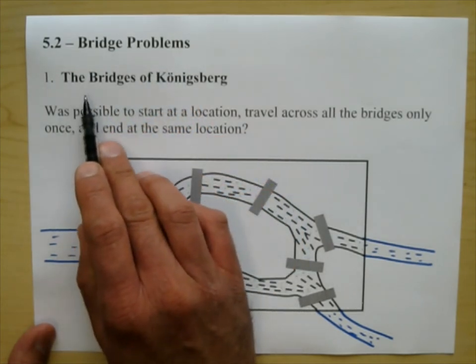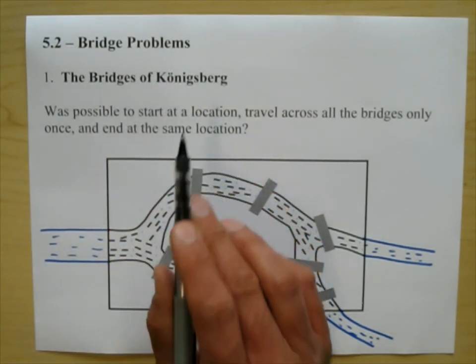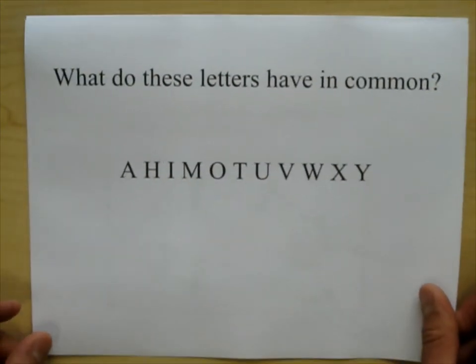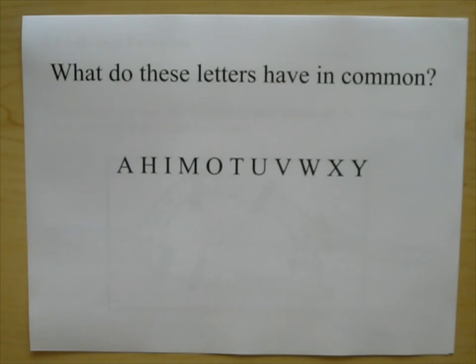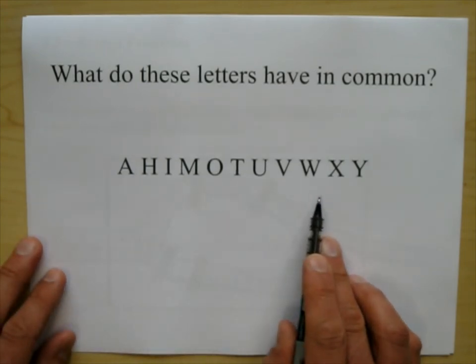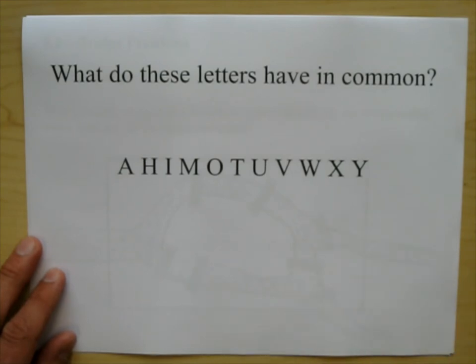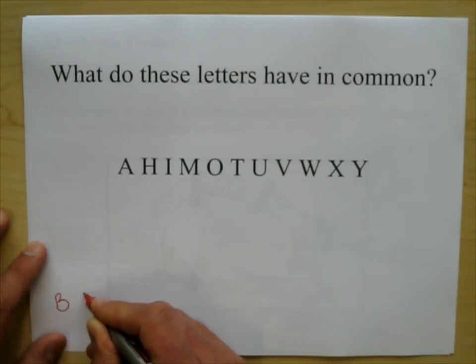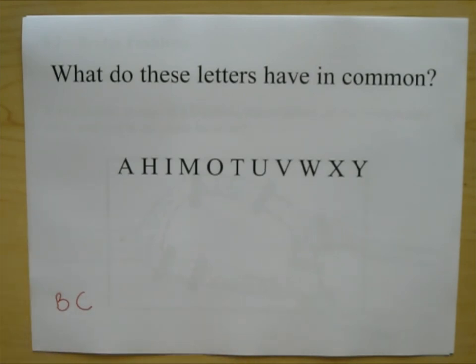We're going to visit the bridges of Konigsberg. But before we do that, let's look at a puzzle. What do these letters have in common? Why can't we put B, C, or D? Why can't you put the other letters on this list? So that is your puzzle for this lecture.